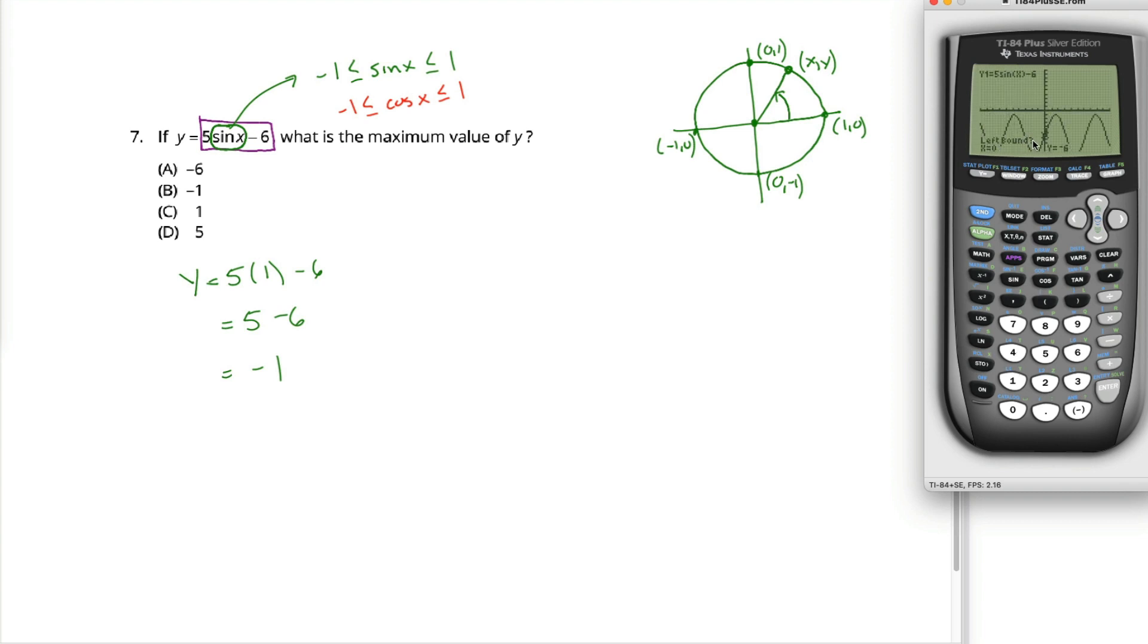The challenge with maximum values is often there's many of them, like we see in this case. So to find a specific maximum, what's called a local maximum or a relative maximum, we have to give our calculator a left bound and a right bound.